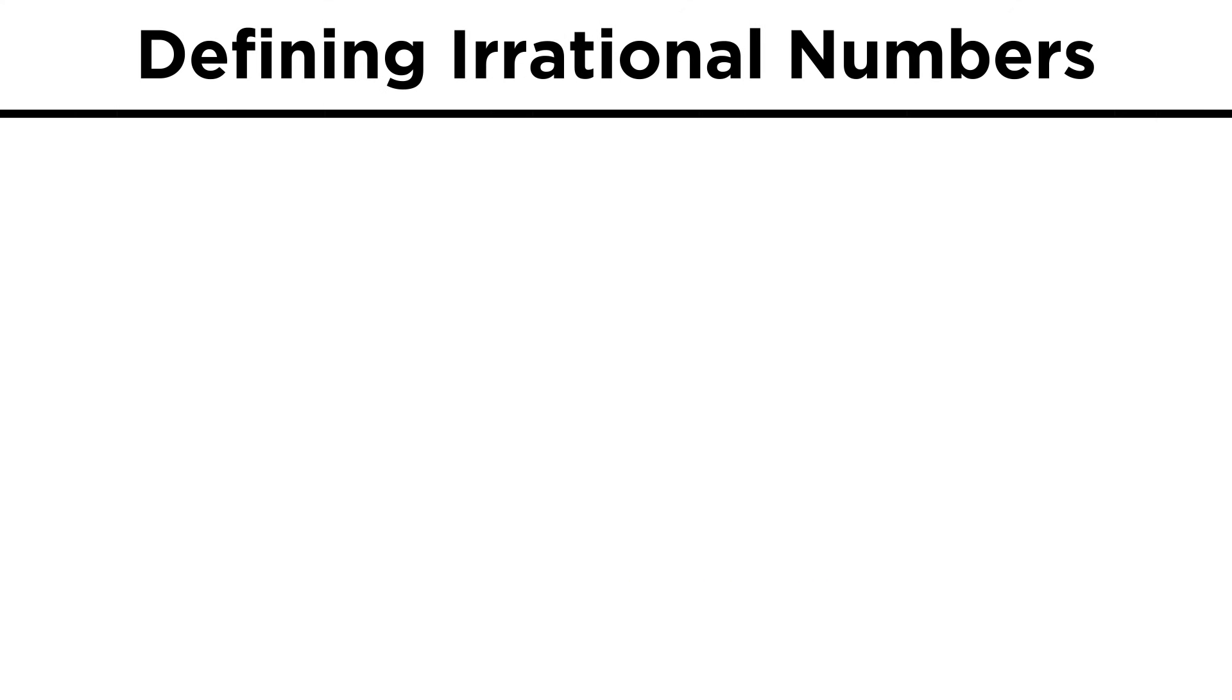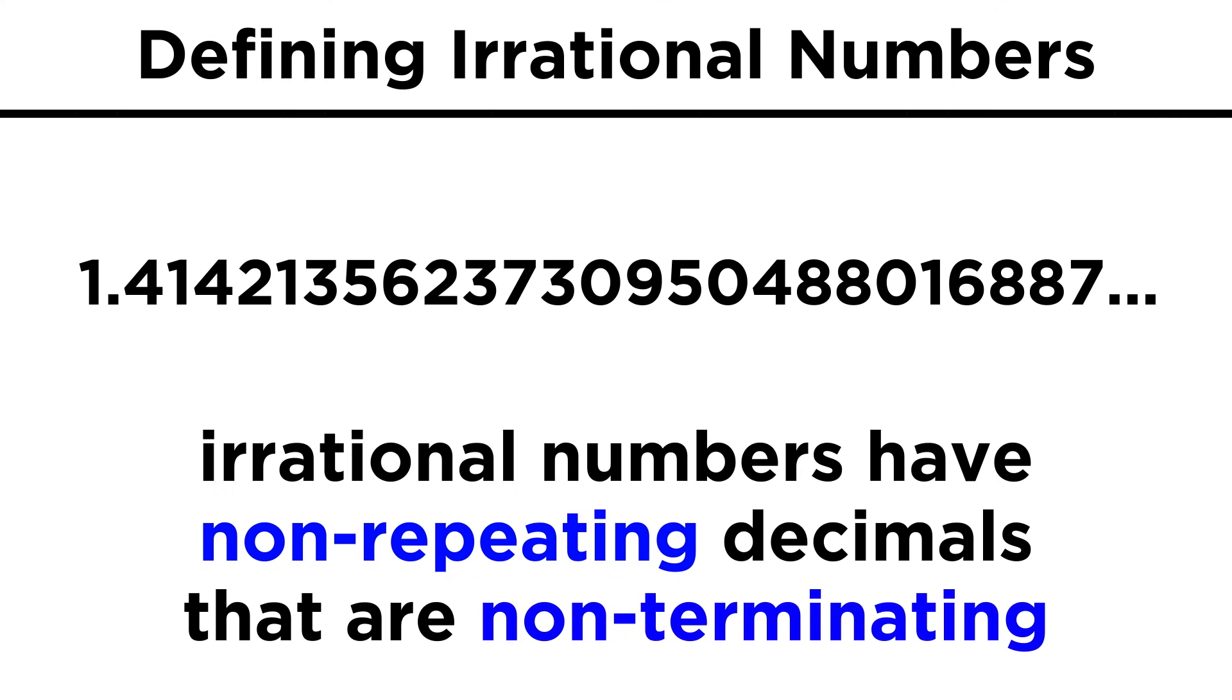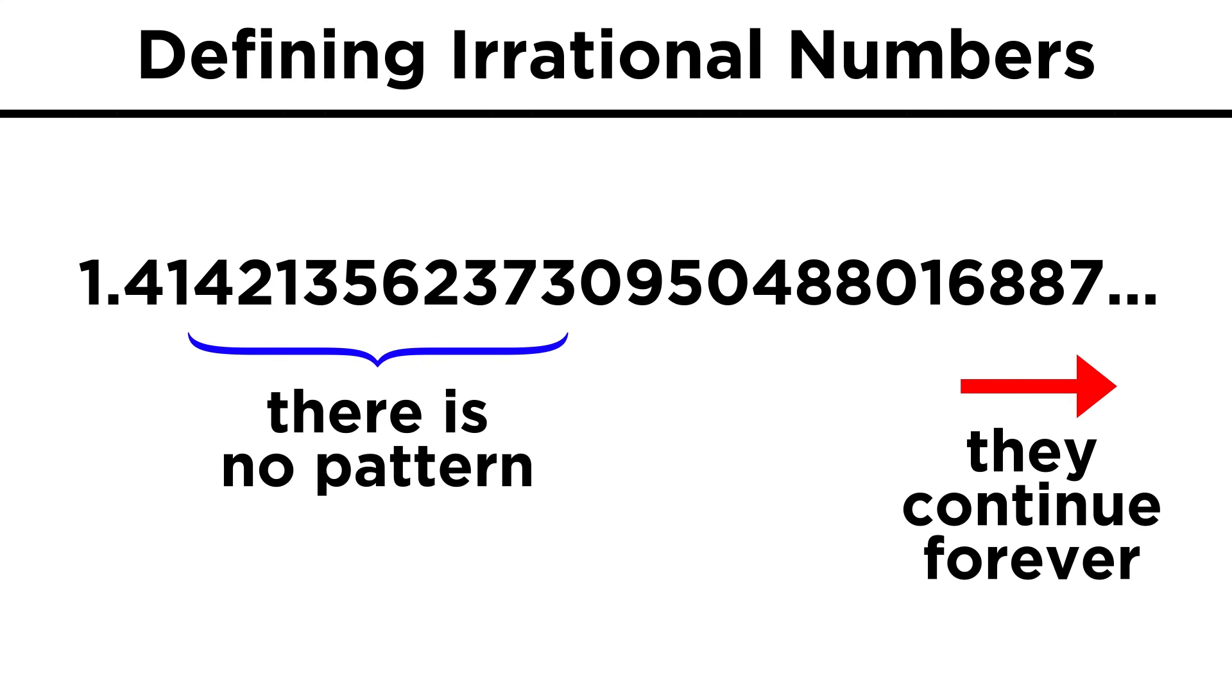Now what are these irrational numbers? Given the definition of a rational number, clearly an irrational number is one that can't be expressed as the ratio of two integers, but what could these numbers be? Irrational numbers are ones that have non-repeating decimals that are non-terminating, meaning they continue forever with no pattern.